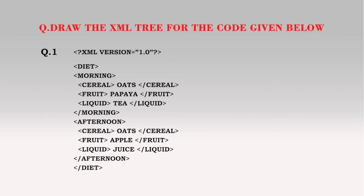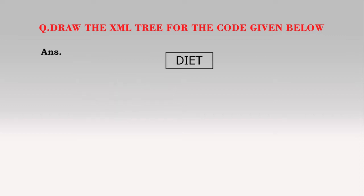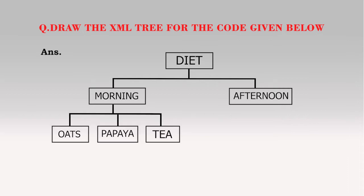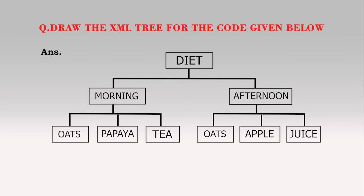Diet. We are going to discuss the code. Diet 2 is our root element. Diet is the same as morning and afternoon. The next element is Oats, Papaya and Tea. Afternoon is the third element. Oats, Apple and Juice — this is the entire element.